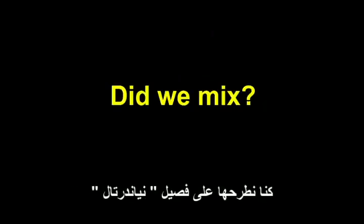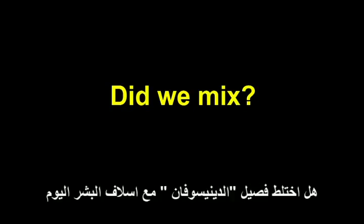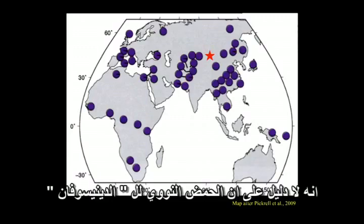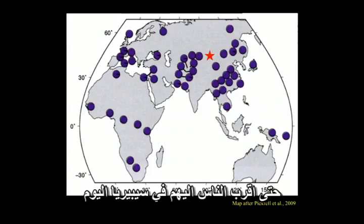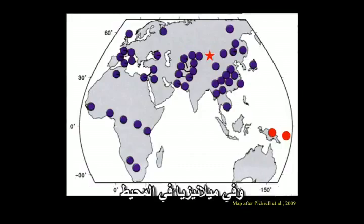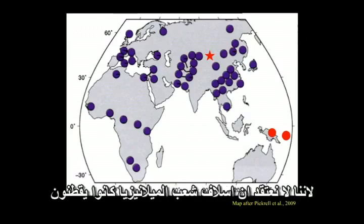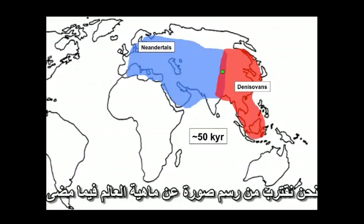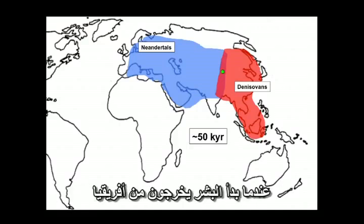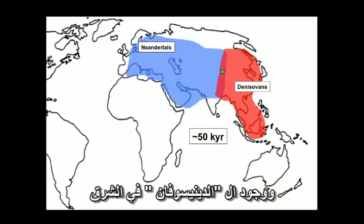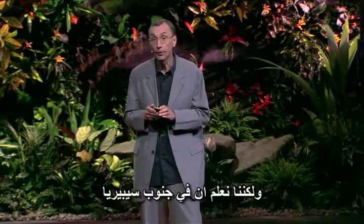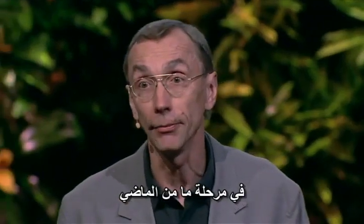We can ask for Denisovans the same question as for Neanderthals: did they mix with ancestors of any present-day people? Comparing the Denisovan genome to people around the world, we find no evidence of Denisovan DNA in any people living even close to Siberia today. But we do find it in Papua New Guinea and in other islands in Melanesia and the Pacific. This presumably means the Denisovans were more widespread in the past, since we don't think the ancestors of Melanesians were ever in Siberia.